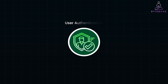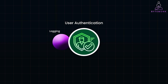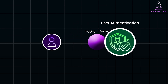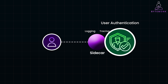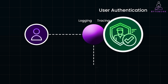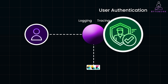Imagine a microservice responsible for user authentication in an e-commerce application. Alongside this service, you run a sidecar container for handling logging and tracing. The authentication service processes user logins, and each time a login request is handled, the sidecar captures detailed logs and traces for that request. So the main service — the user authentication service — processes the login request, whereas the sidecar intercepts incoming requests, extracts metadata, and forwards the log to a centralized logging system like ELK or Splunk. Additionally, the sidecar generates distributed traces to monitor request flows, helping to identify bottlenecks or failures. This improves visibility into your service's behavior without cluttering your core service code with infrastructure-specific logic.